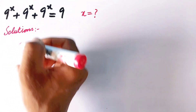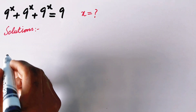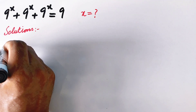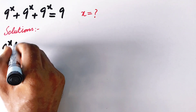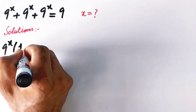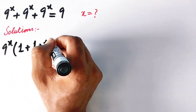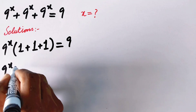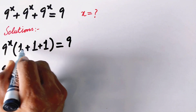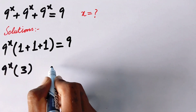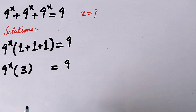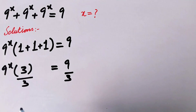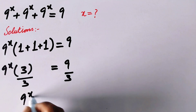By the first method, we will take 9^x as common from the left side of the equation. It will become 9^x times (1 + 1 + 1) = 9. In the next step, 1 + 1 + 1 is equal to 3, so we have 9^x times 3 = 9. We will then divide both sides by 3, so this 3 cancels, leaving 9^x on the left.